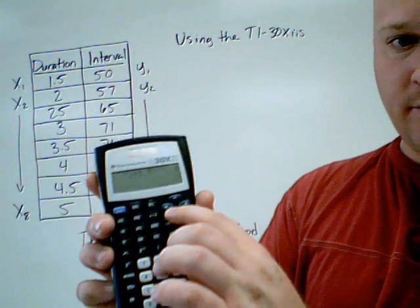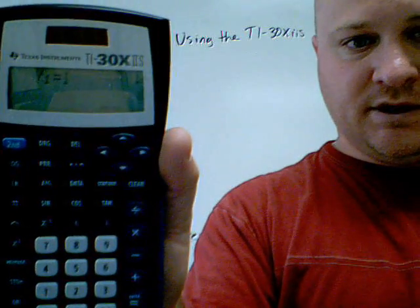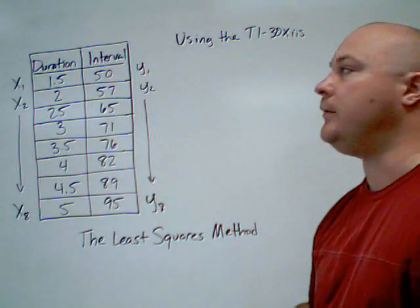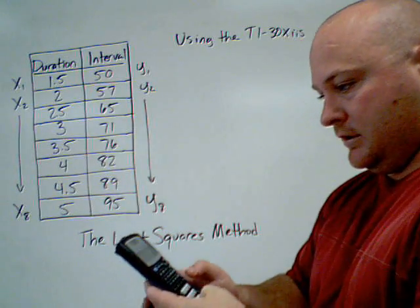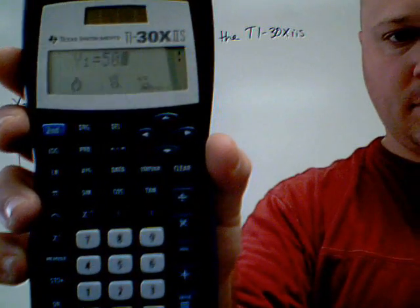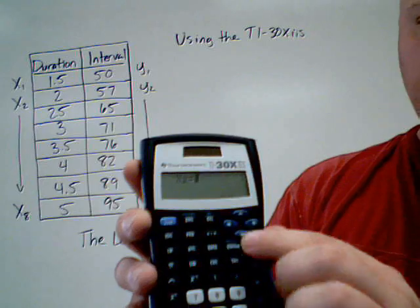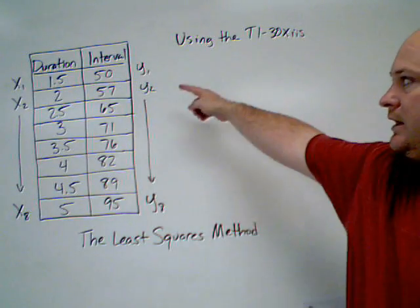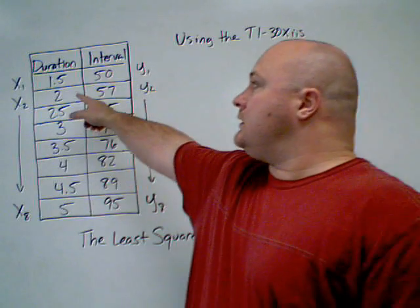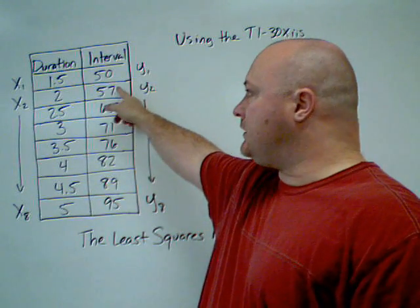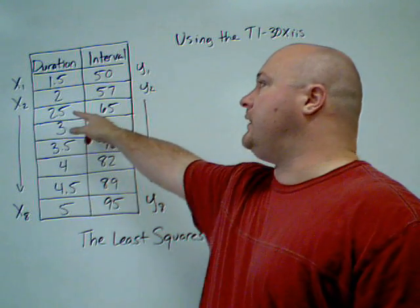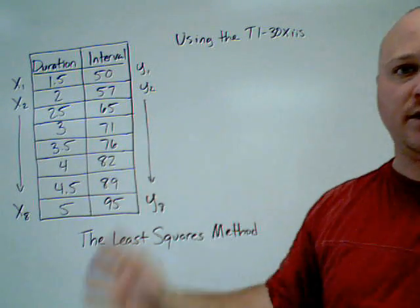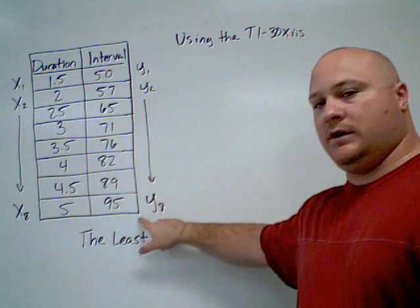Here we go. Hit the down arrow, and you will see y1. Default it goes to 1, but we're going to change it to 50. So just type in 50, and then hit down again, and it will take you to x2. Do that all the way down. So you're going to have 2 down, 57 down, 25 down, 2.5 down, 65 down, and so forth. Do that until you get all the way to the end.